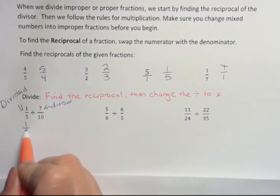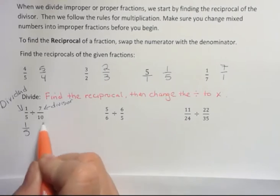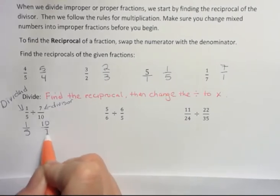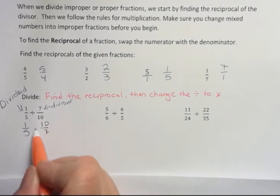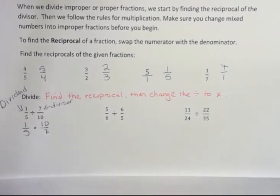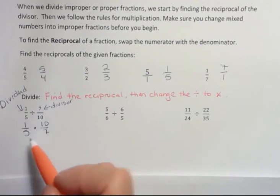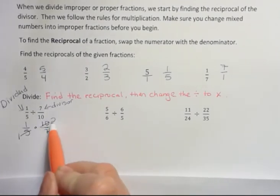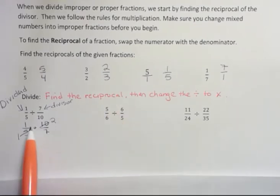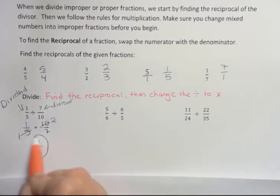So we have 1 over 5, and this is going to become 10 over 7. That's the reciprocal. We're just flipping it. And then we're going to change the division into multiplication. Now, if we can cross-cancel, we will. 5 goes into itself one time, and it goes into 10 twice. If I multiply straight across, 1 times 2 is 2, and 1 times 7 is 7, there's my answer.